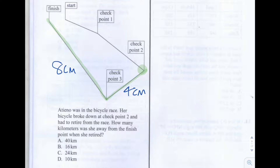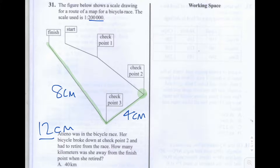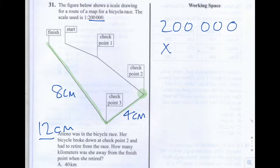So the total distance that she would have to travel in order to complete the map, according to the scale drawing, is 12 centimetres. We know that the scale used is 1 to 200,000, which means that every 1 centimetre on this scale drawing is equivalent to 200,000 centimetres in the real world. So she would have to travel 12 times 200,000 centimetres.